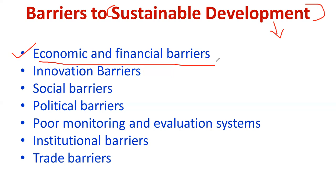Moreover, many companies are not running with profit — many companies have a very low profit margin. By that time, to implement EPM, environmental protection activity, and sustainable development is not easy, because they have to invest more while the profit margin is less. That is another issue.